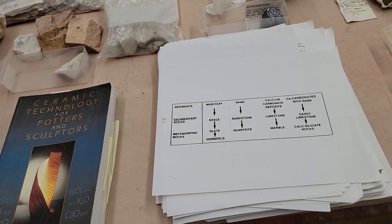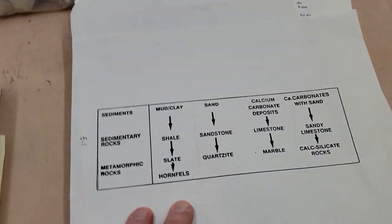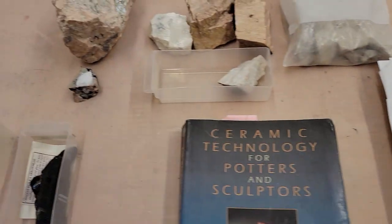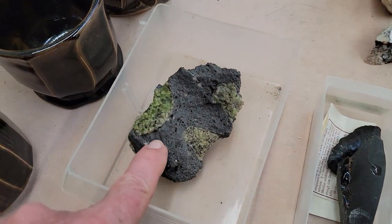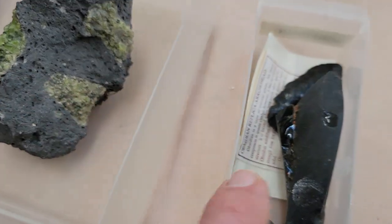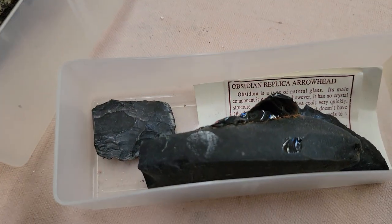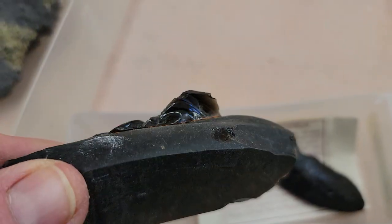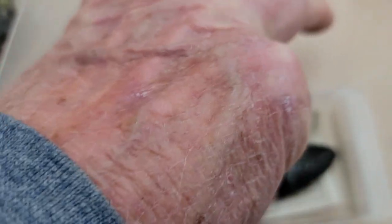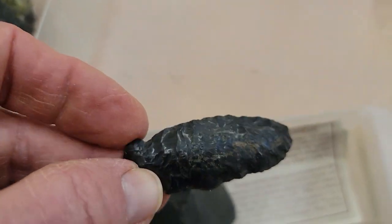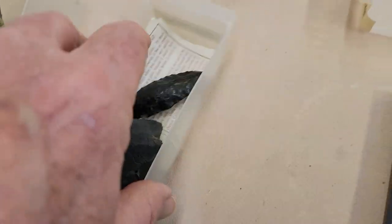Here is the basalt with the olivine I showed you. And then here is obsidian — this is a quickly cooled basalt that forms a glass. In the olden days they would chip these to carve arrowheads, and they'd make really cool arrowheads.